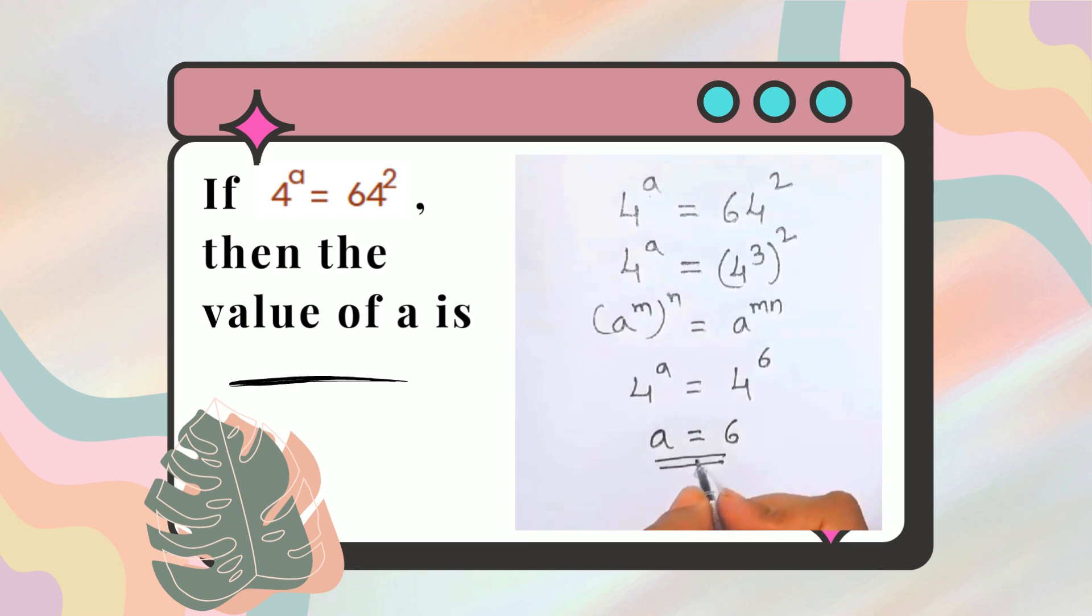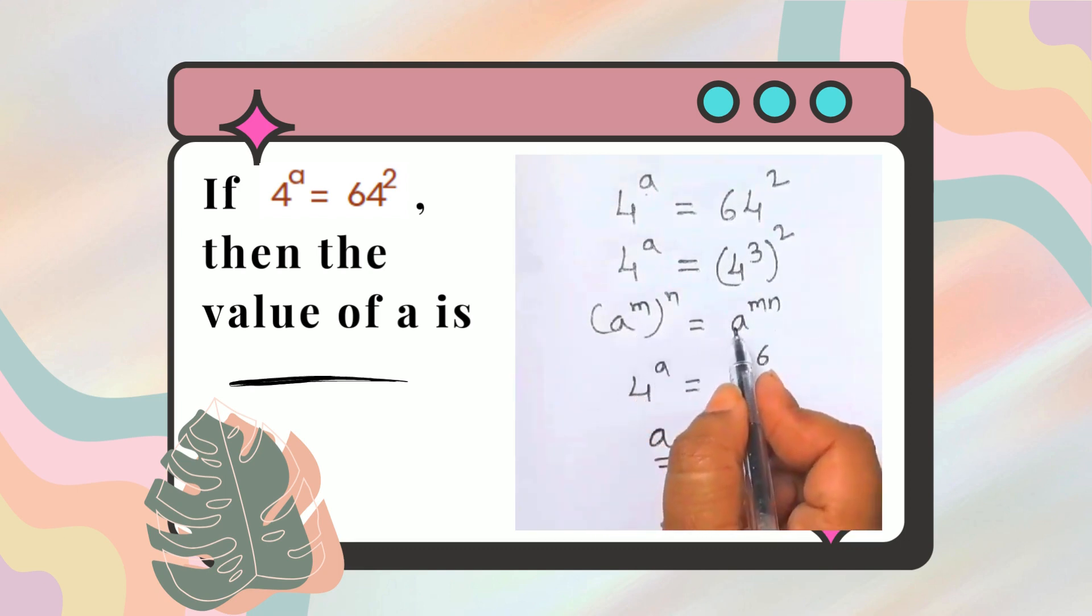So we solved this problem by using power of power rule and also the property which states that if two powers with same base are equal, then their exponents are equal.